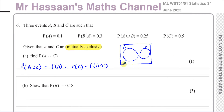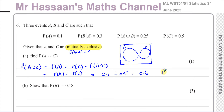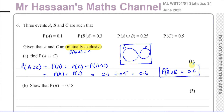Since A and C are mutually exclusive, P(A∩C) = 0. So it's simply P(A) + P(C) = 0.1 + 0.5 = 0.6. That's the answer to part A. P(A∪C) = 0.6.